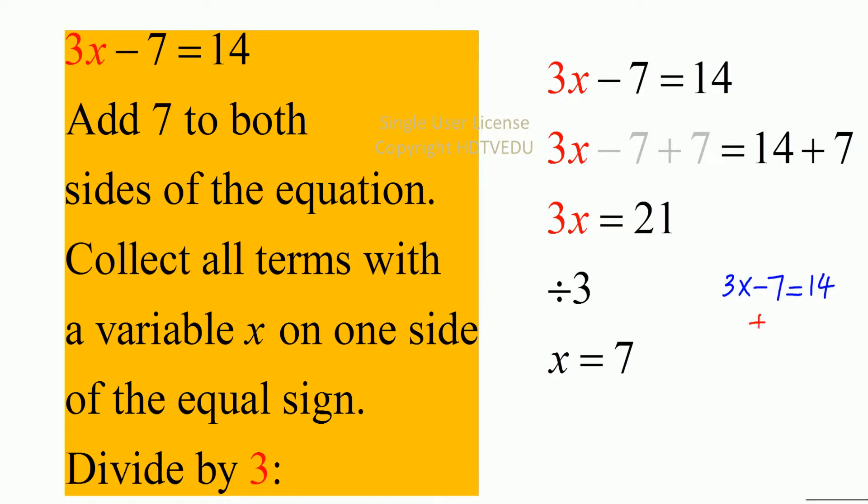Add 7 to both sides. What do we get? 3x is equal to, negative 7 and plus 7 cancels out. What is 14 plus 7? 21.